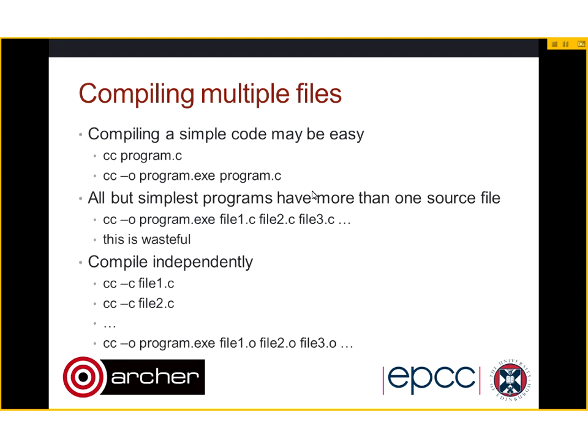To set the scene: compiling a simple code might be easy. You can do cc program.c to get a.out, or cc -o program.exe program.c. But all but the simplest programs have more than one source file. So what you could do is every time you want to compile your program, you do cc -o program.exe and list all the files: file1, file2, file3.c.